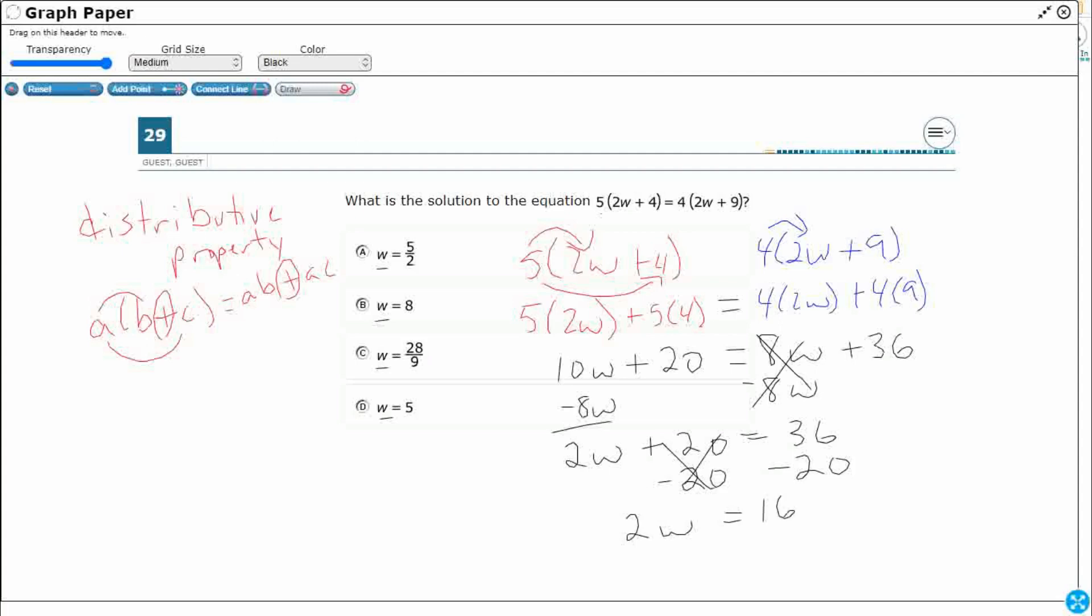And now all we have to do is think inverse operation of the 2 times W. We're going to multiply. That 2 times W is multiply, so we need to divide by 2. Both sides. W equals 8. And that is our answer, B.